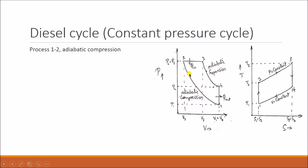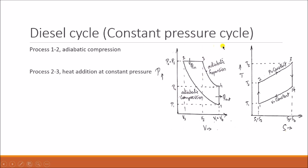The air reaches point 2, from pressure P1 to P2, the volume decreases and the pressure increases. The next process is heat addition — process 2 to 3, heat addition at constant pressure. During this process, the pressure of that air is kept constant and heat is added to it, hence we call it a constant pressure cycle.